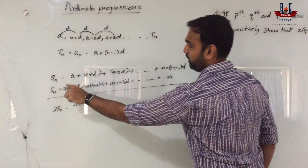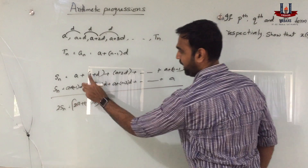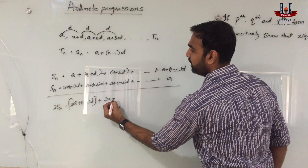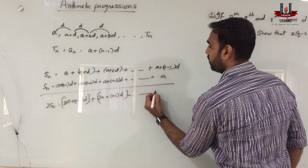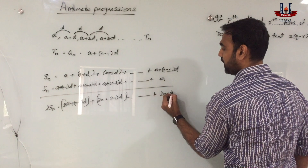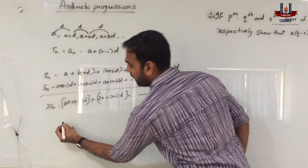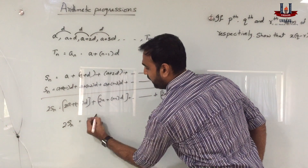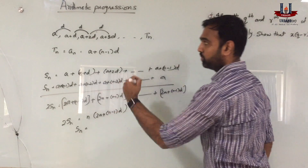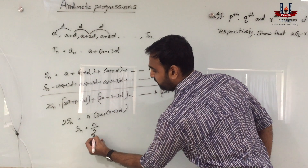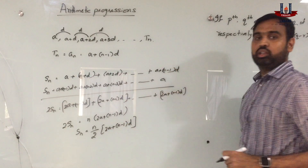When you add both these series, we get a plus a plus (n minus 1) into d. Adding the two terms: a plus a is 2a, and (n minus 2) plus 1 is (n minus 1) into d — the same value repeats n times. So we get 2Sn equals n times [2a plus (n minus 1) into d], which means the sum of n terms in an arithmetic progression is given by n by 2 into [2a plus (n minus 1) into d].